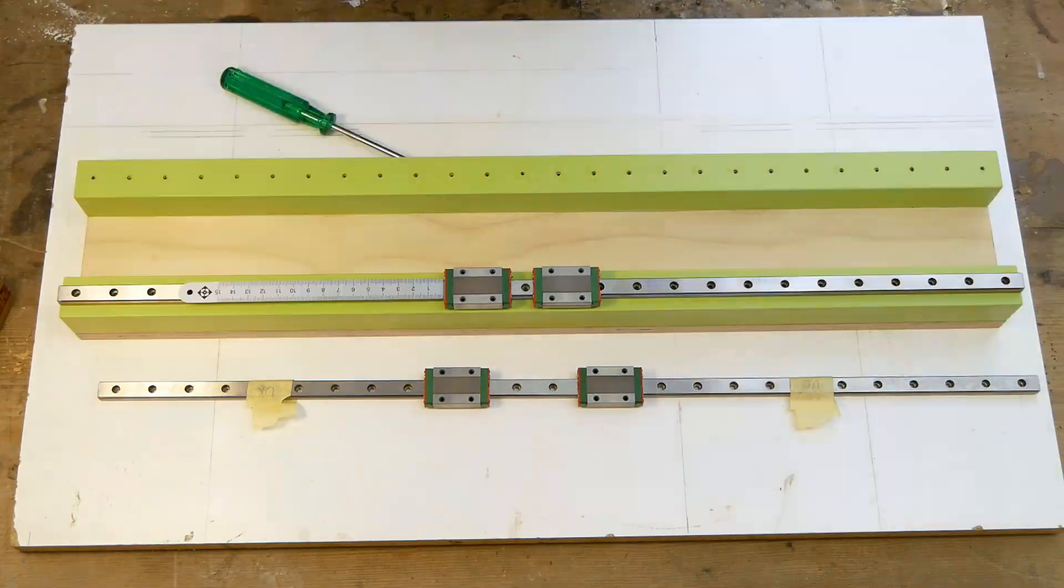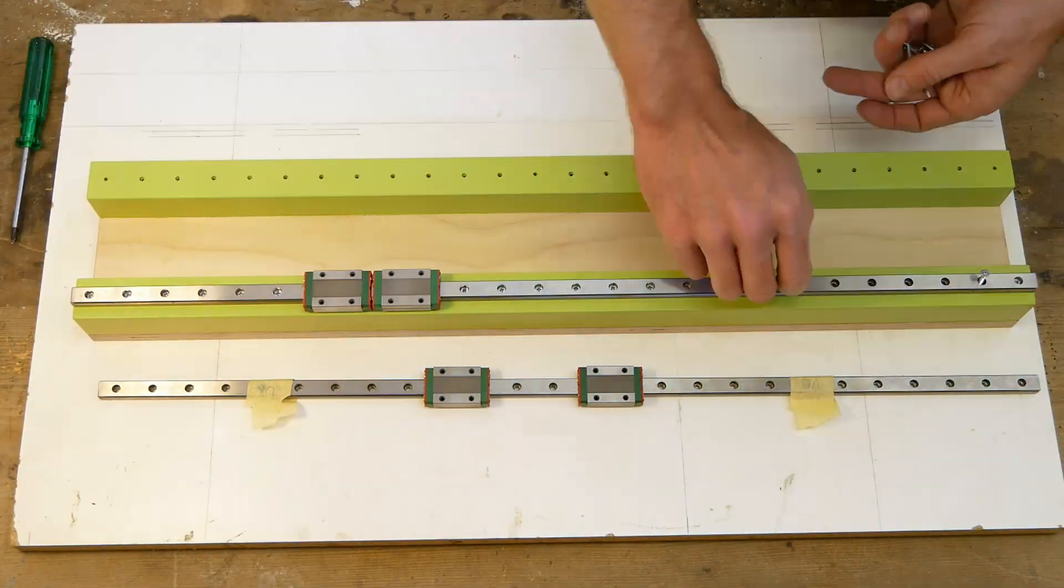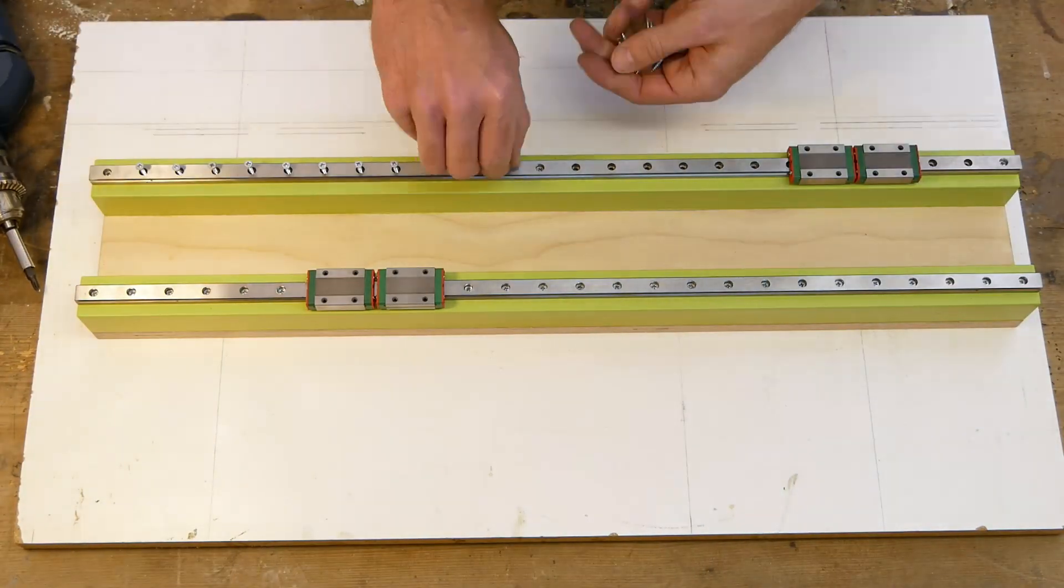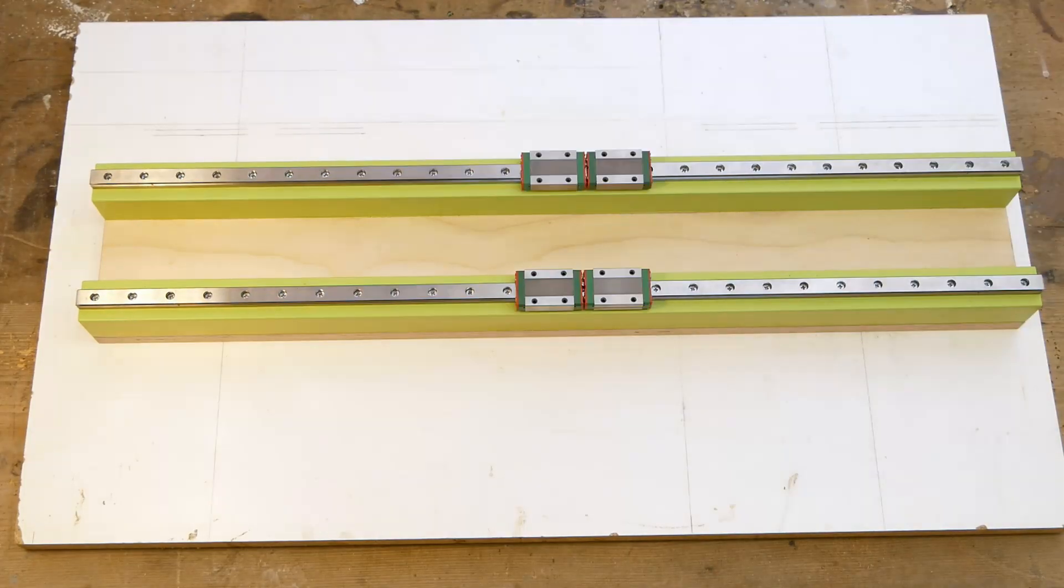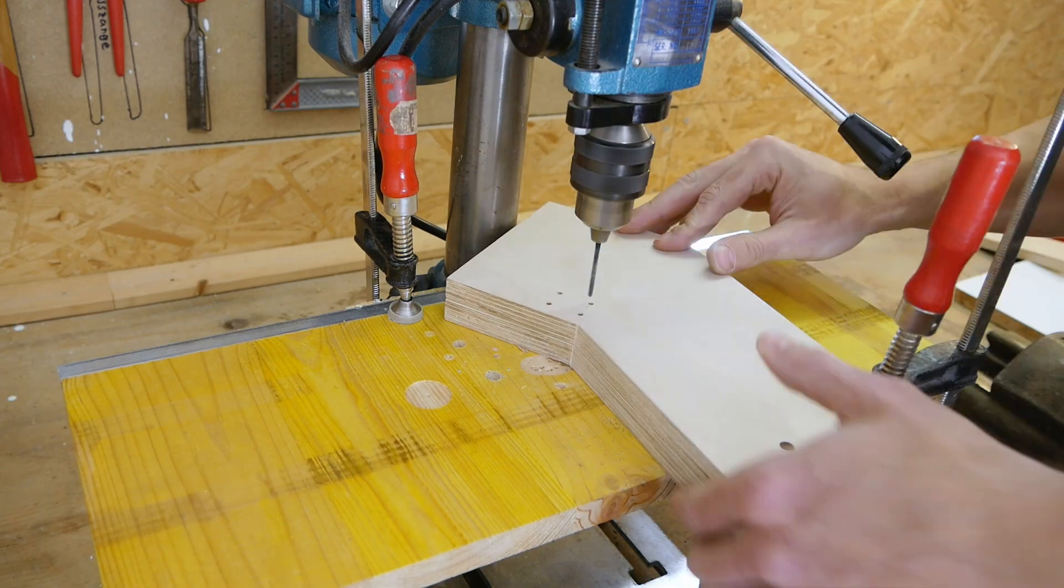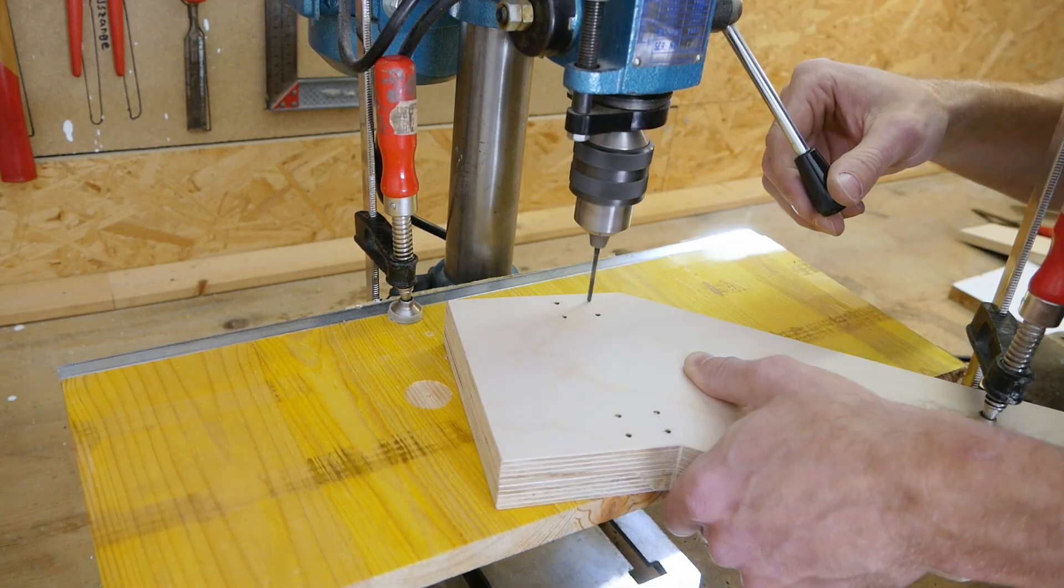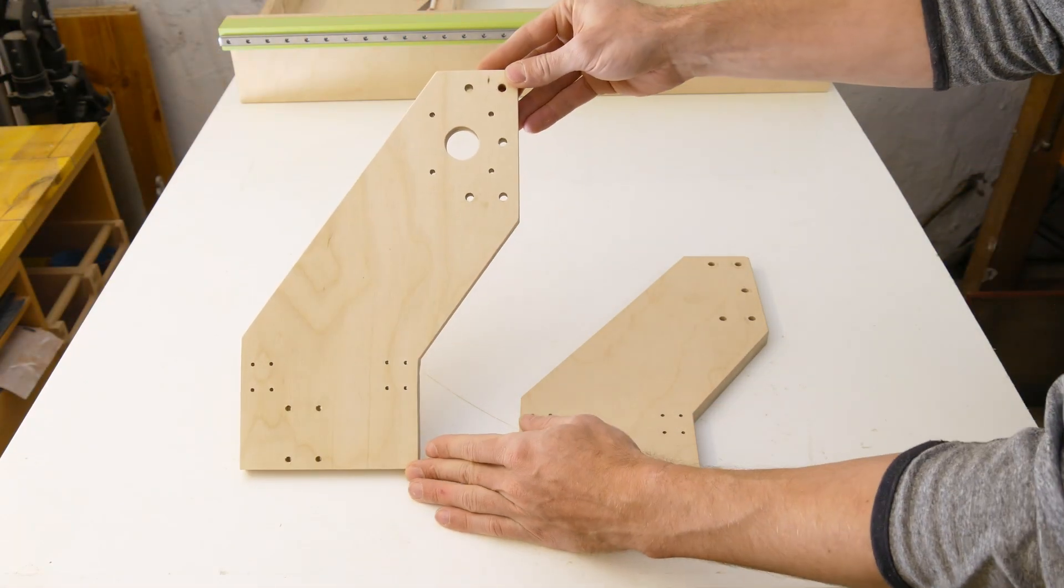I then screwed the linear rails in place. When pre-drilling the holes, I had already made sure that the rails were going to be in a perfectly straight line. Now, while screwing the rails on, I double-checked with a ruler that they were nicely aligned before finally tightening the screws. I was now able to work out the positioning for the holes of the carriages to mount the z to the x-axis as well as for mounting the whole gantry to the frame. These are the final pieces with the motor mount on the left side.